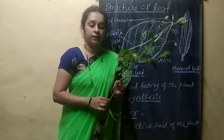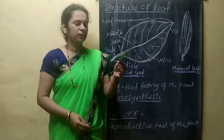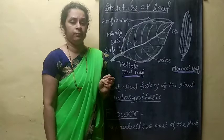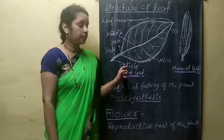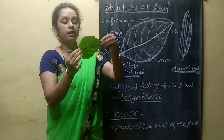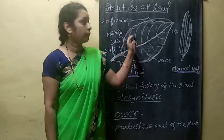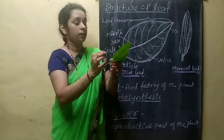Next we will discuss about the structure of the leaf — what are the parts of a leaf. Here we will consider one leaf as an example. Mainly the leaf is having a stalk. The stalk of the leaf is called a petiole. The part where the petiole arises is called the leaf base. The broad green structure is called the leaf lamina. Inside the leaf lamina you will come across a middle line — that dark line is called the midrib.